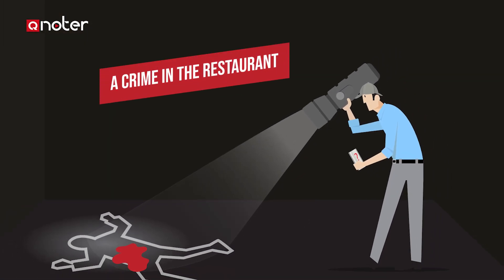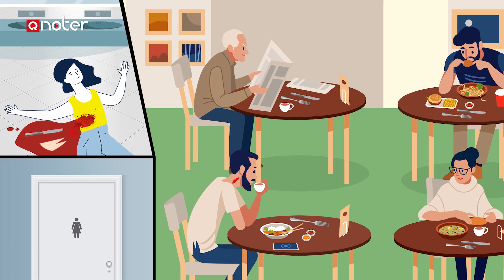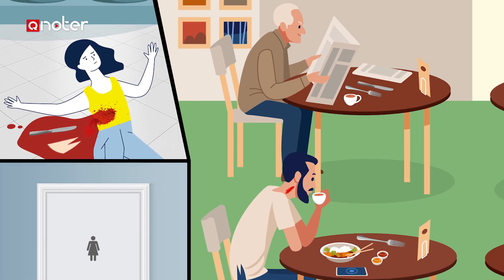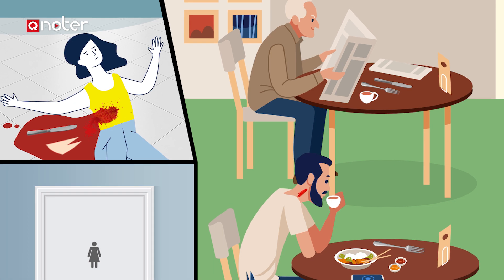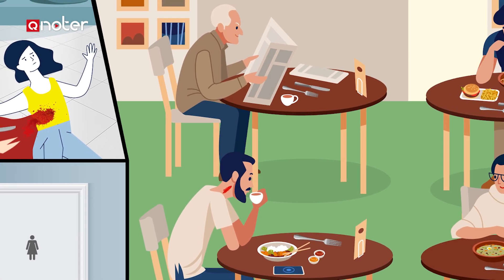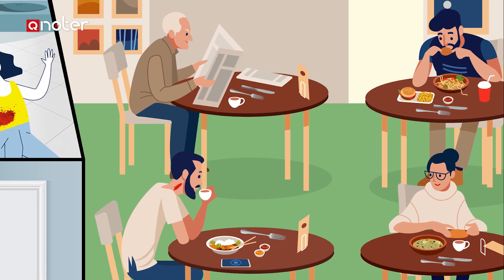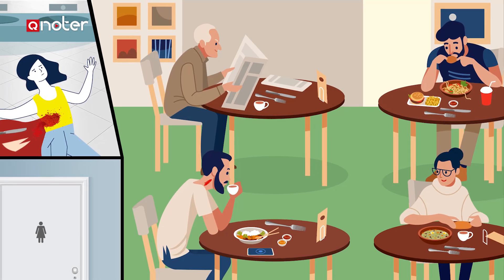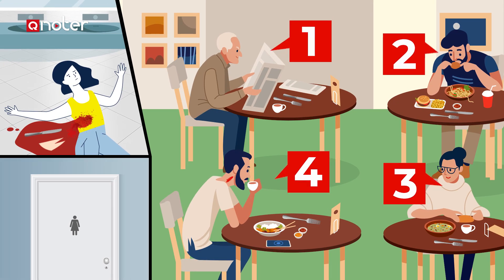A crime in the restaurant. A woman was murdered in a restaurant bathroom. But by looking at this picture, can you identify the killer by noticing certain details? This riddle requires you to pay attention to the small details. Let's see if you can identify the killer in 15 seconds. The countdown has now started.